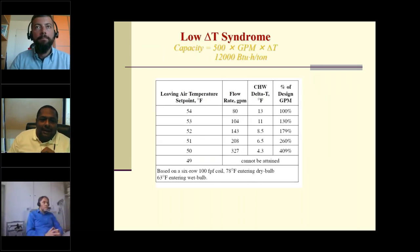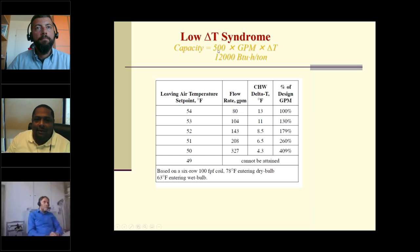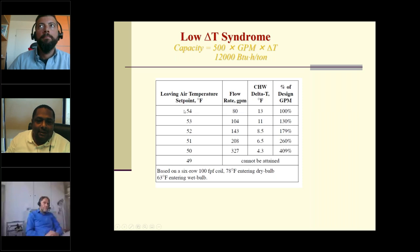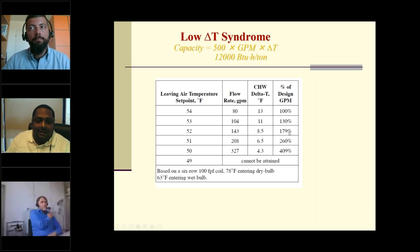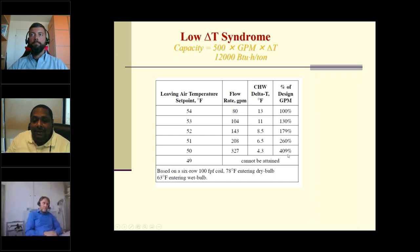The low delta T syndrome creates trouble by increasing GPM flow. In this example, using a 1000-ton capacity system: if the flow rate is 80 GPM with a chilled water delta T of 13°F — supply 41°F, return 54°F — reducing return temperature to 53°F increases flow to 104 GPM; at 52°F it goes to 109 GPM, 79% extra; and at 50°F the GPM jumps from 80 to 370 — a 400% increase.